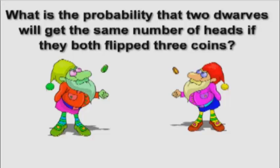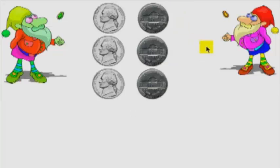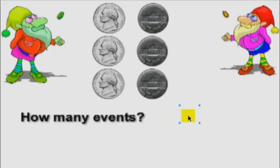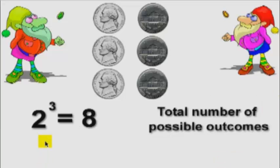What's the probability that these two guys are going to flip three coins each and get the same number of heads? To solve this problem we need to figure out the total possible outcomes in a single event — that's two, either heads or tails — and how many events there will be, which is three. Using the probability formula, two to the three equals eight, which is the total number of possible outcomes. That number eight is going to be the denominator for all individual probabilities.